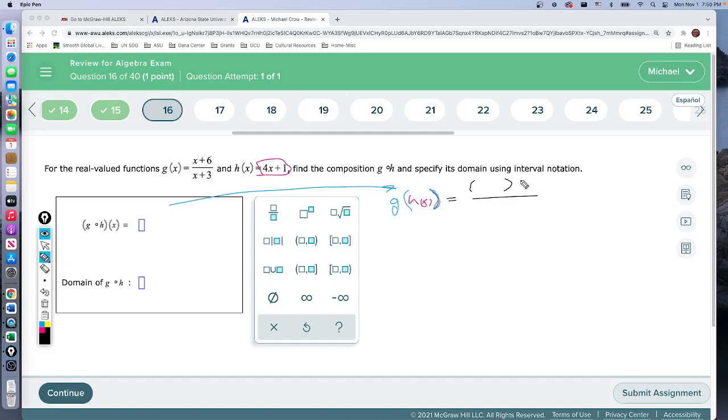So that's x plus 6 in the numerator. The denominator we have x plus 3, and this is just a nice big open spot waiting for the input of 4x plus 1. So everywhere we have this open space we're going to put in 4x plus 1.